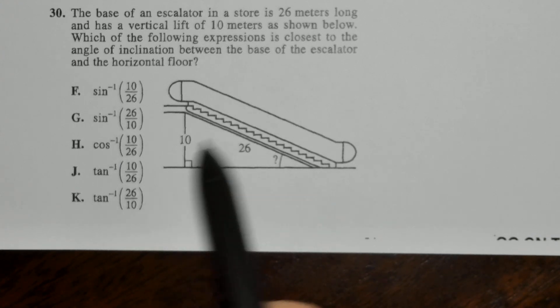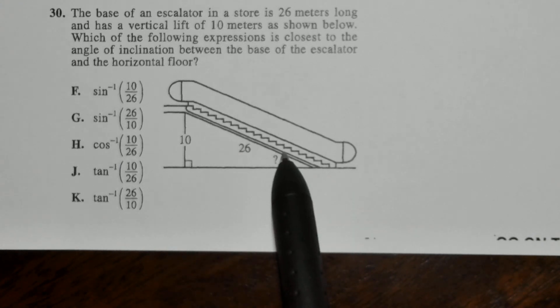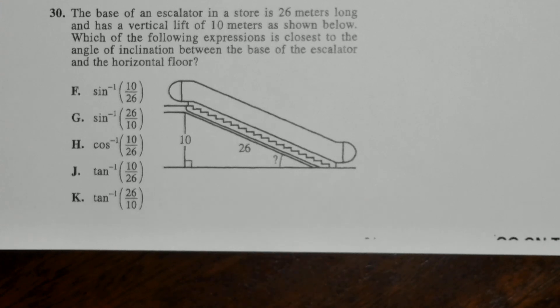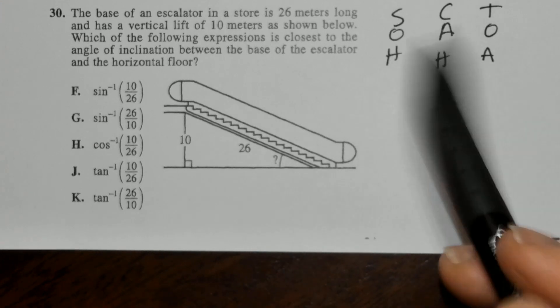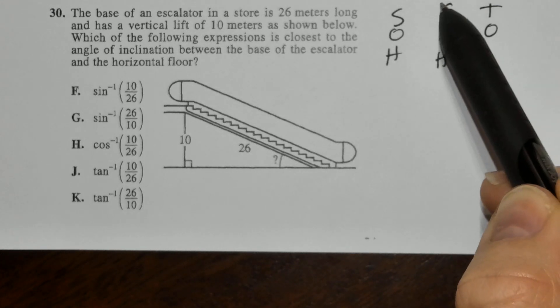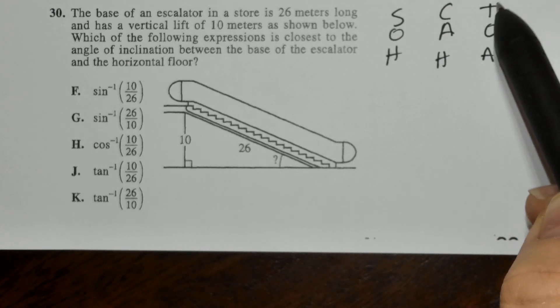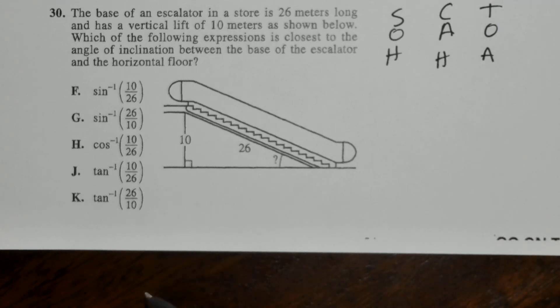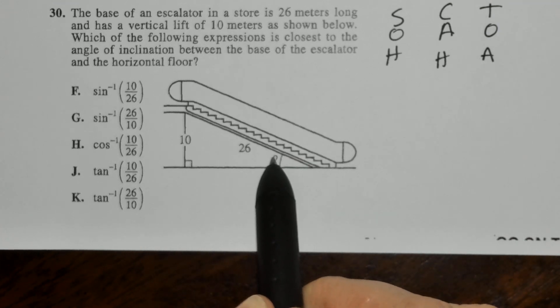I have two sides, and I have a right triangle. I can figure out this angle. SOHCAHTOA helps me remember that sine is opposite over hypotenuse, cosine is adjacent over hypotenuse, and tangent is opposite over adjacent. From this angle, 10 is opposite.